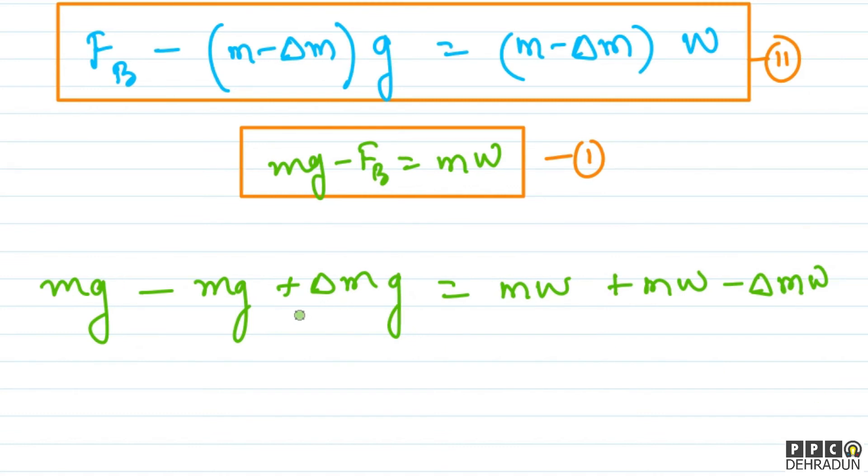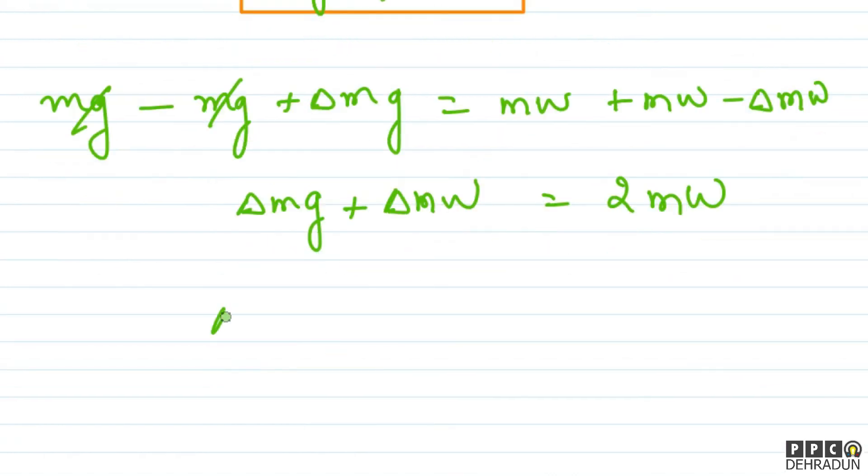So see, from here kids, this Mg will also cancel out with that Mg, so what will we get? Delta Mg plus delta M into W. Delta M into W is equal to twice of M into W. So from here finally, we got the value of delta M, and that is delta M equals 2MW divided by W plus G.